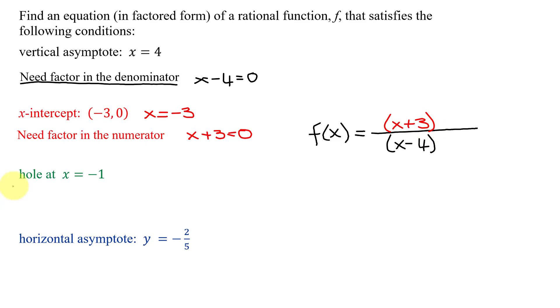Next, I know there is a hole at x equals negative 1. Where do holes come from? They come from reducing a common factor between the numerator and the denominator. So I'm going to need the same factor in the numerator and the denominator.